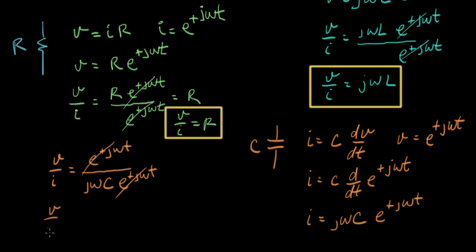And for a capacitor, we get V over I equals one over j omega C. So this says that the ratio of voltage to current in a capacitor depends on the value of the capacitor, of course, and it also depends on frequency. So just like with the inductor, we have a frequency term in here.